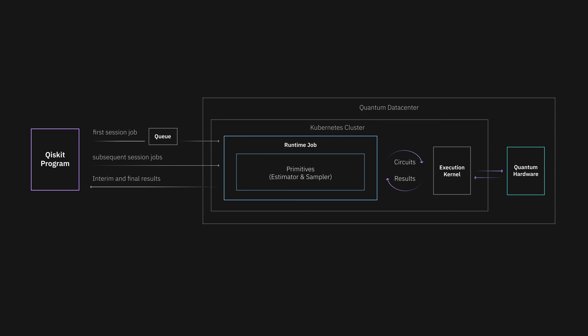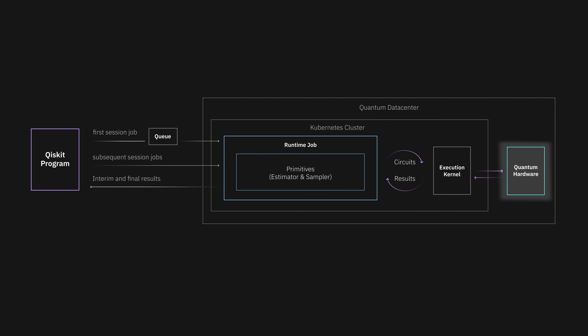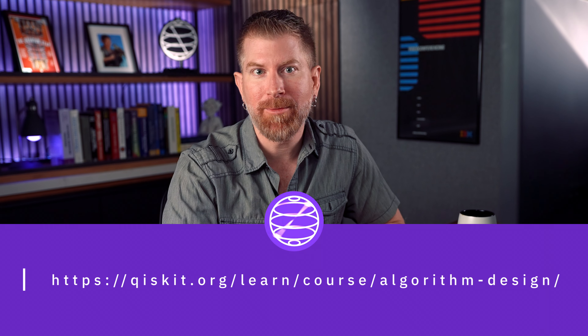As an overview, you start with the Qiskit program just as before. After opening a Runtime session, your first primitive call puts you in the queue. And when it's your turn, the primitive sends the appropriate circuits to the execution kernel, which then runs the job on quantum hardware. The results are then passed back to the Qiskit program, where we can use our interim results to inform our search-based exploration. Note that subsequent session jobs have priority in the queue, thereby reducing latency and increasing efficiency.